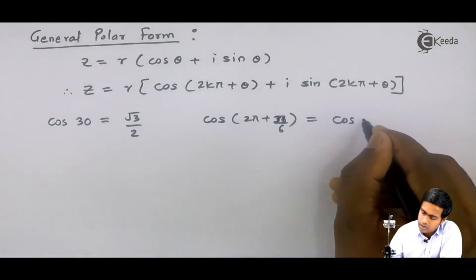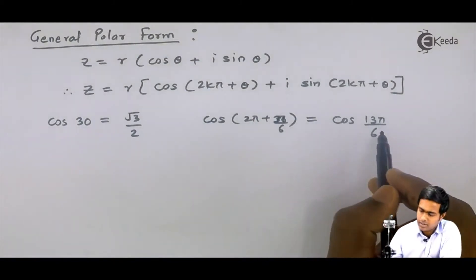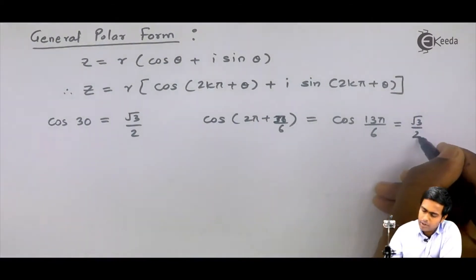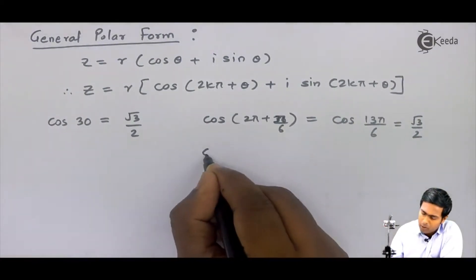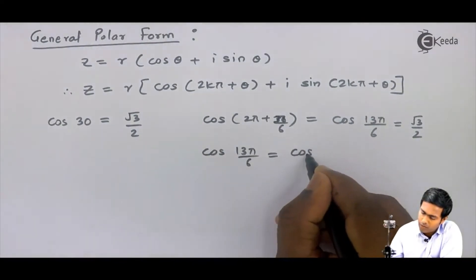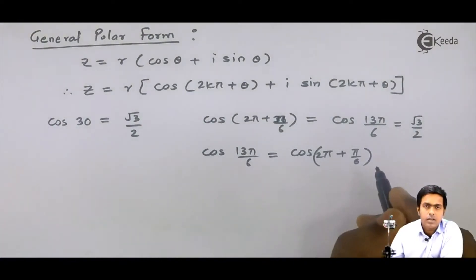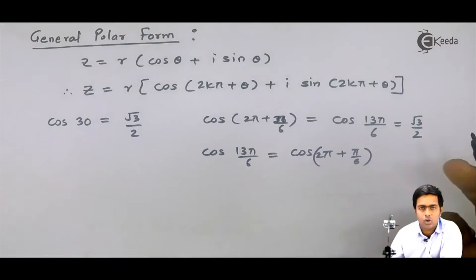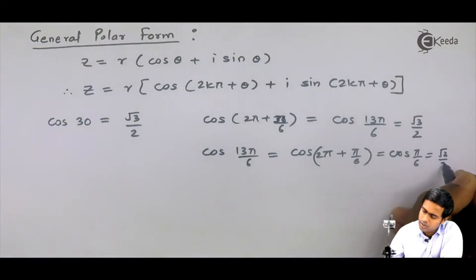So this will give me cos of 13π/6. Now if you will try to find out the value of cos of 13π/6, then you will again get √3/2. If you want to find it manually, then let's try: cos of 13π/6 is equivalent to cos of 2π plus π/6. Now cos of 2π plus θ is cos θ, so I will get cos of π/6, and cos of π/6 is √3/2.